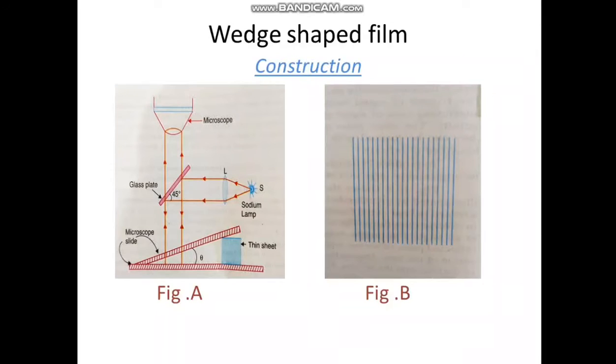will not be parallel. They appear to diverge from a point near the film. The path difference between the rays reflected from the upper and lower surfaces of the air film varies along its length due to variation in film thickness. Therefore,